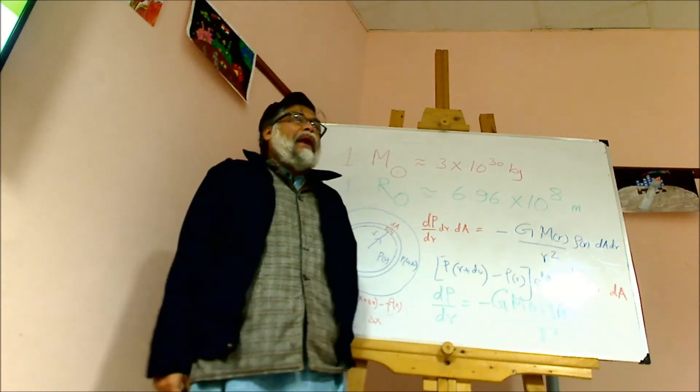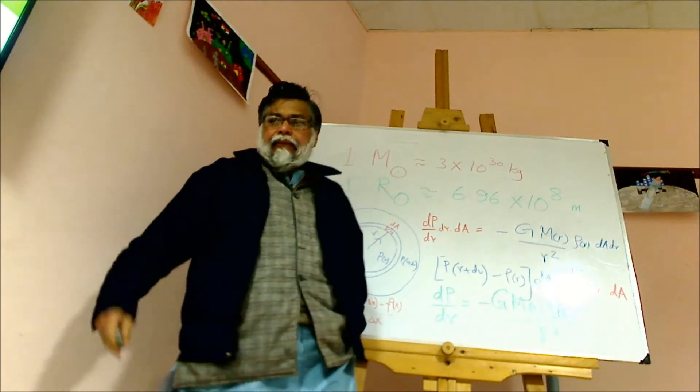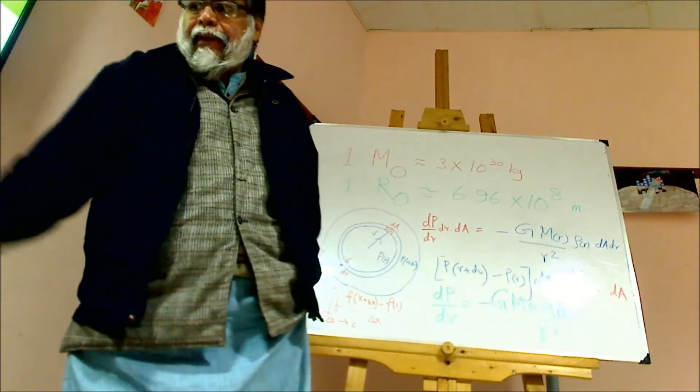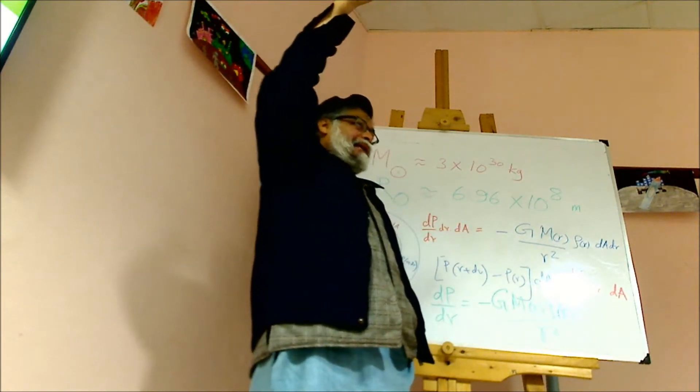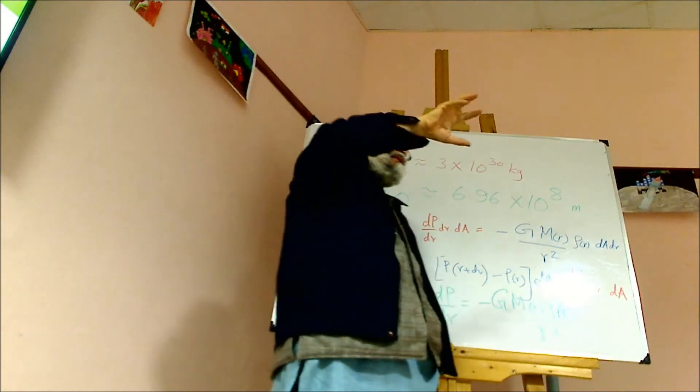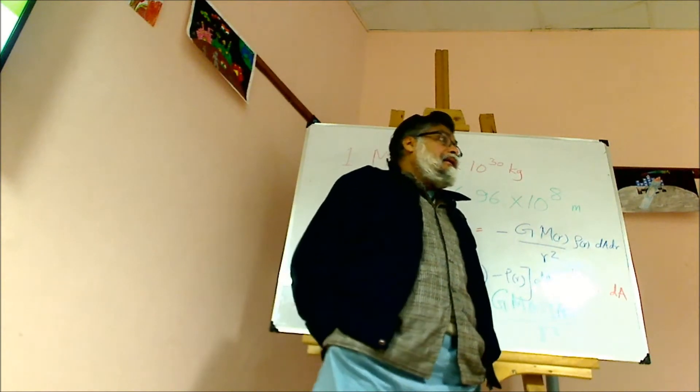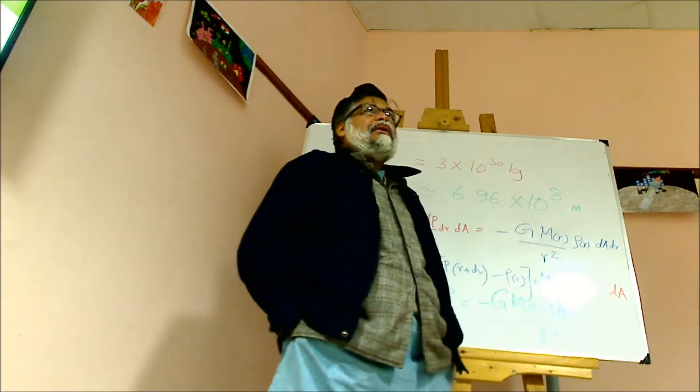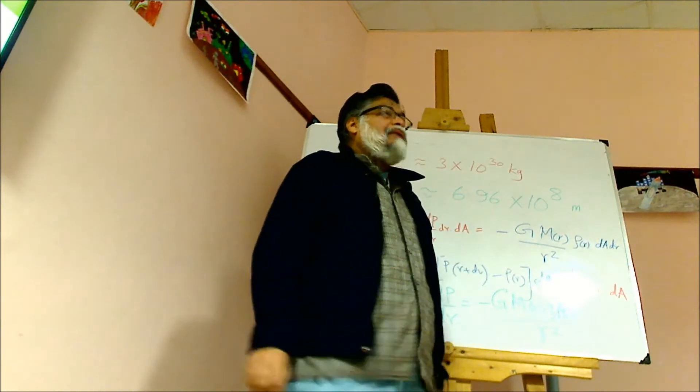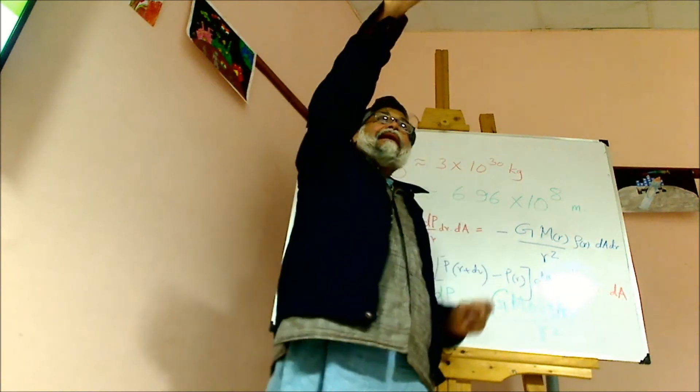Why was Chandrasekhar interested in white dwarfs? The reason was that white dwarfs were discovered later. Why was it discovered later? There is a reason. There is a star, Sirius—when you look at the sky, Sirius looks like a single star to us.